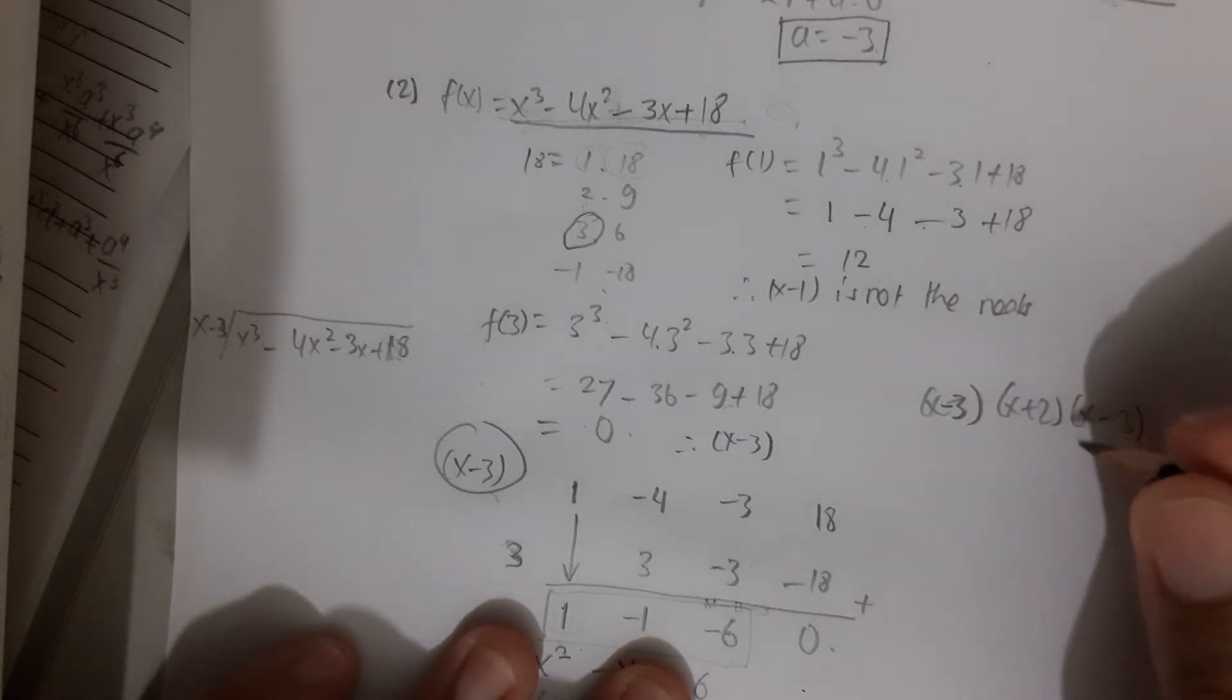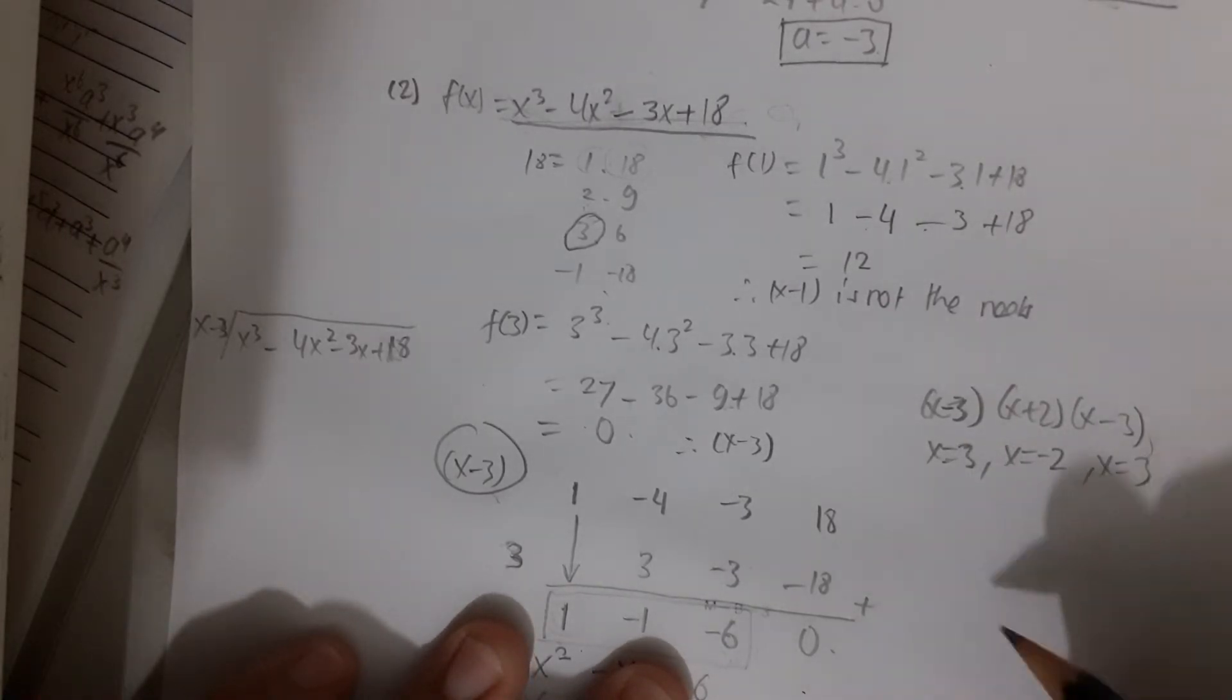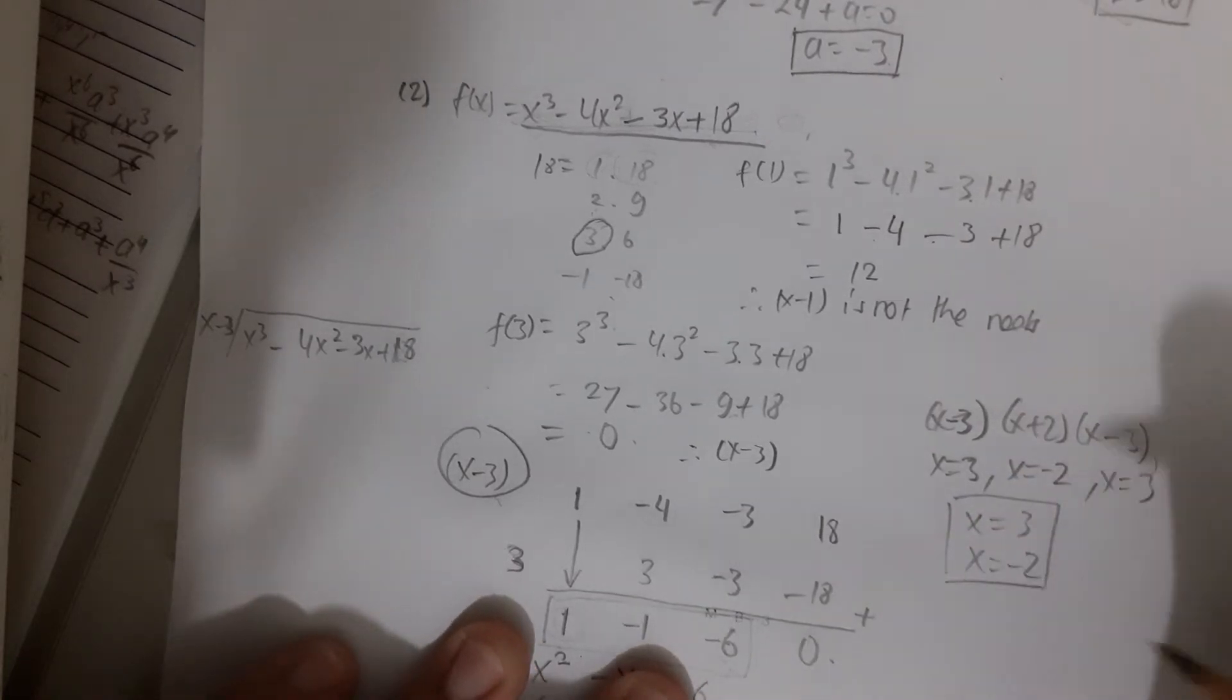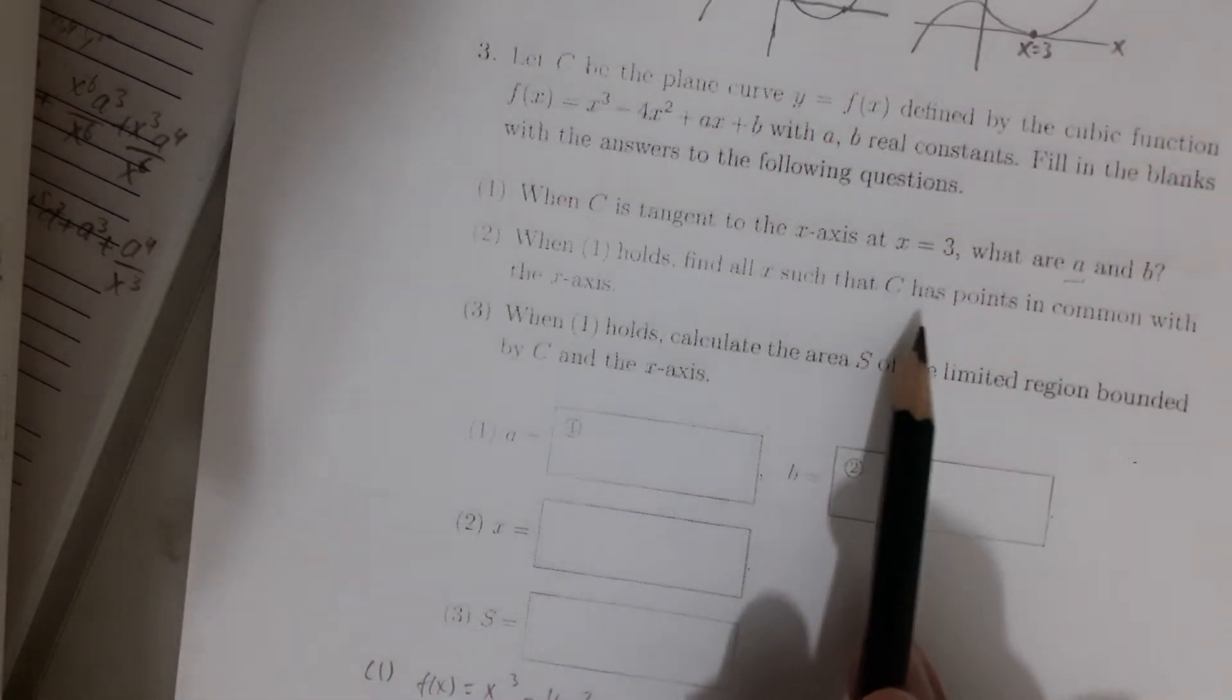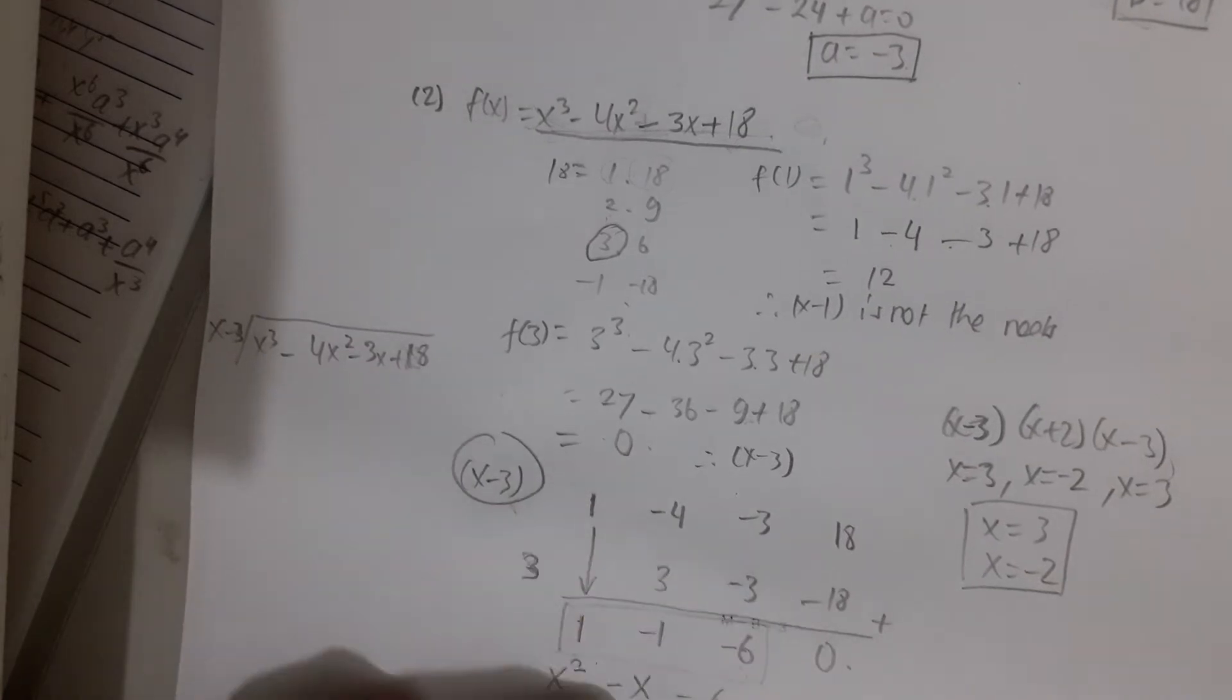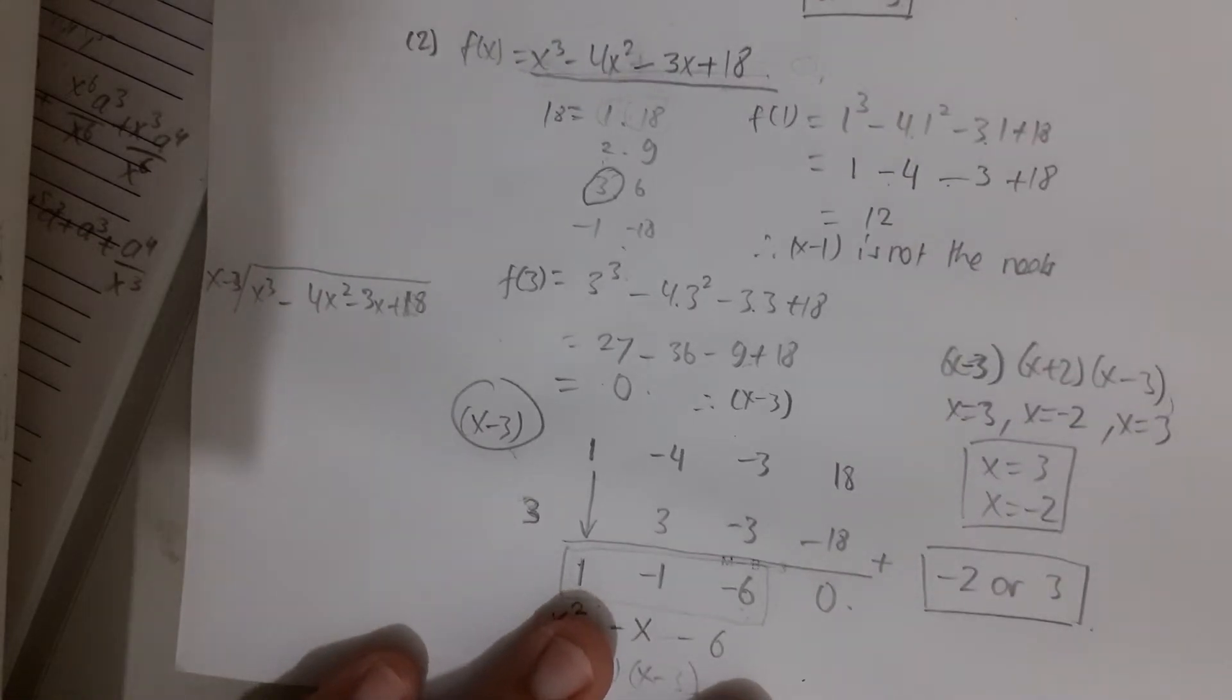Now we are going to find the roots. Just make it equal to 0. So it is x equals 3, x equals minus 2, and x equals 3. So there are 2 threes. Well, that means that they touch at the same point in the x-axis. Therefore we got 2 x's, which we already answered the question. The answer is minus 2 or 3. So the points that are in common with the x-axis are minus 2 or 3.